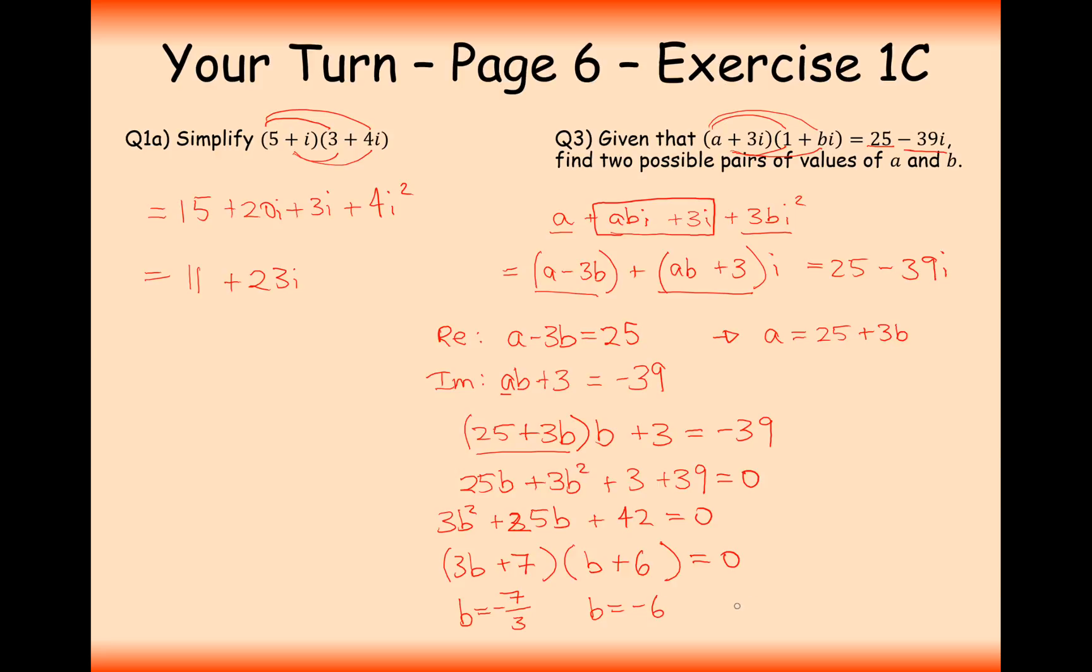So now all that's left for us to do now is find the corresponding values of a. So when b is minus 7 over 3, 25 minus 7 is going to be 18. And when b is minus 6, we're going to have 25 minus 18 here, so a is going to be 7. So our two pairs of solutions here are a equals 7, b equals minus 6, or a equals 18, b equals minus 7 over 3.